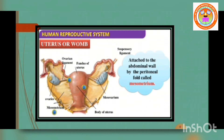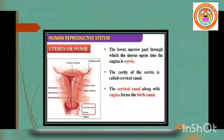The wall of the uterus has three layers of tissues: the outermost thin membranous serous layer called the perimetrium; the middle thick muscular layer called the myometrium; and the inner glandular layer called the endometrium. The endometrium undergoes cyclic changes during the menstrual cycle, while the myometrium exhibits strong contractions during parturition.